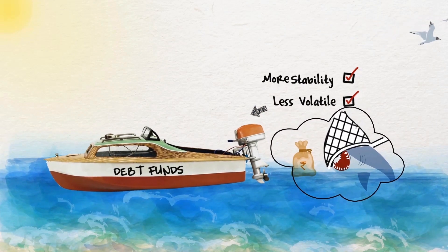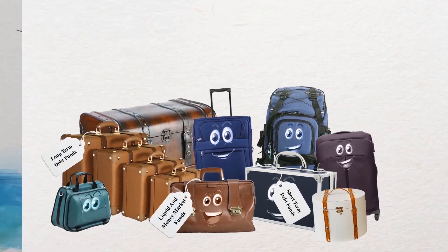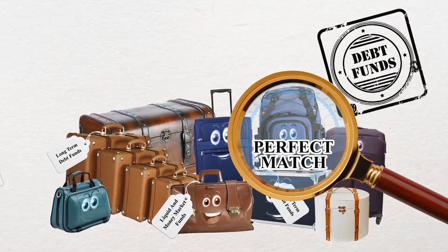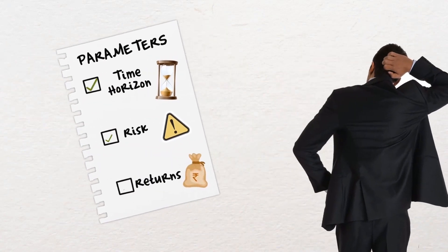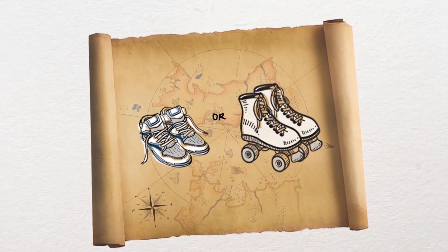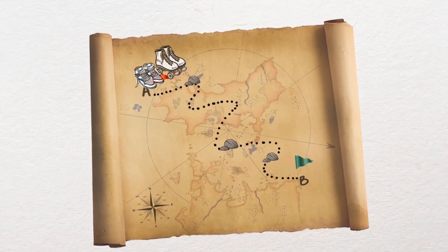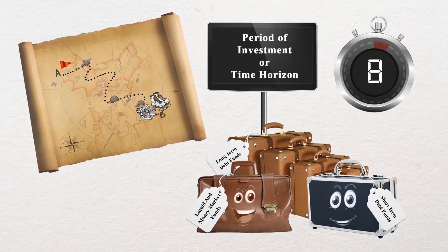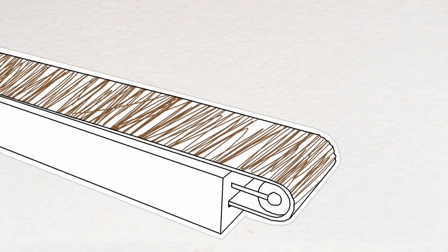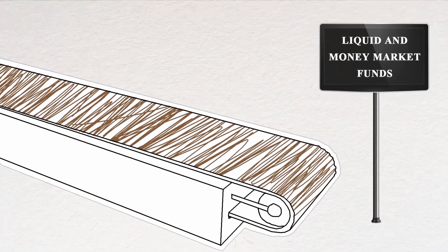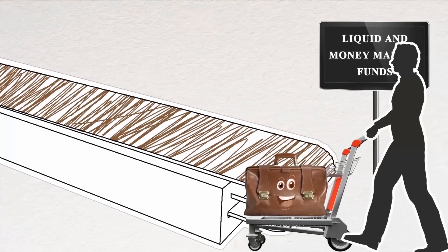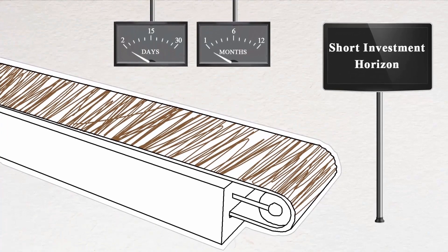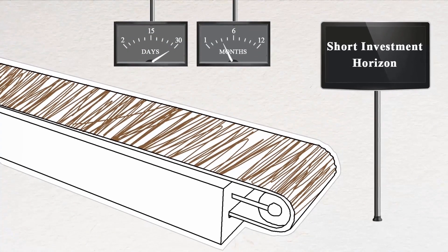Debt funds are less volatile and more stable because they limit the risk you take on your investment. There are different kinds of debt funds to choose from. Just like the choice of walking shoes or roller skates depends on how fast you need to get there, there are different kinds of debt schemes depending on the period of investment or time horizon. Liquid and money market funds are suitable for investors with surplus or idle money but very short investment horizons, ranging from a few days to a few months.